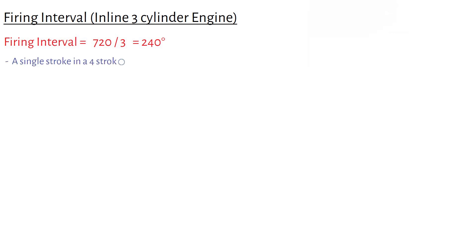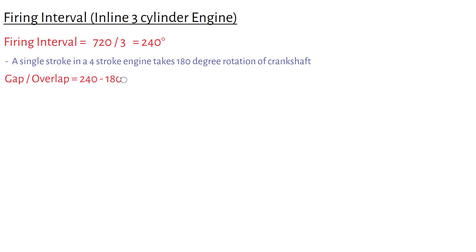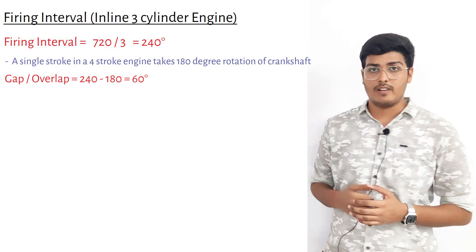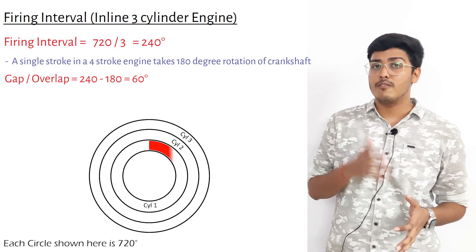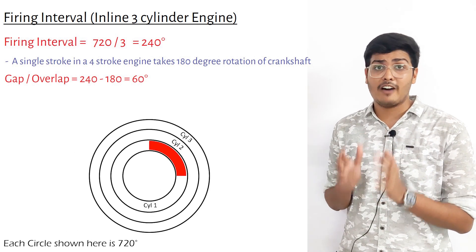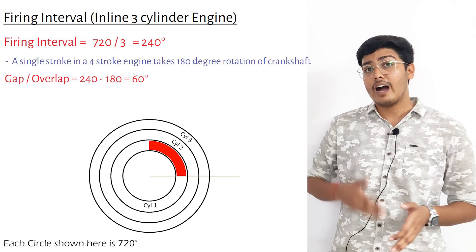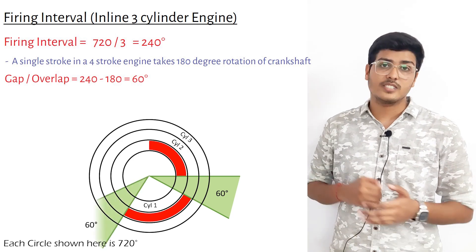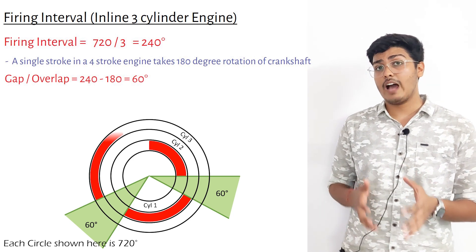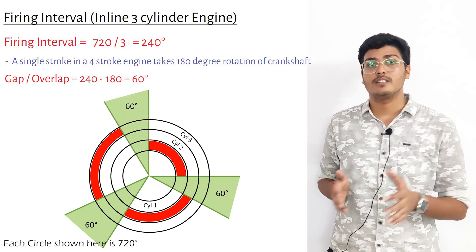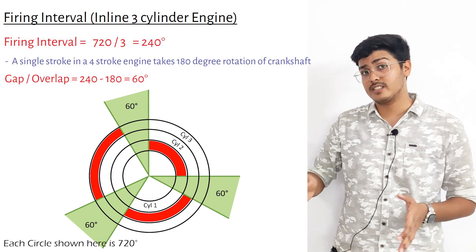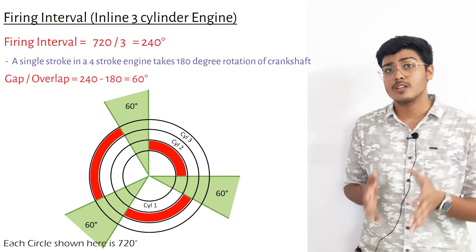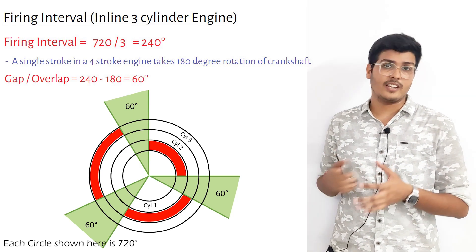A single stroke of a four-stroke engine takes 180° of crankshaft rotation. So 240° − 180° = 60°, meaning the engine is silent for 60° of crankshaft rotation. As shown in the interval diagram, the first cylinder fires over 180°, then the second cylinder fires after a 60° gap, and the third cylinder fires after another 60° gap. We have a gap of 60° between each power stroke, meaning no power is delivered during these intervals. This uneven power delivery is the reason for the lack of smoothness in an inline three-cylinder engine.